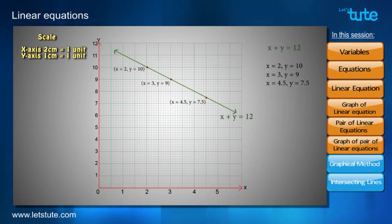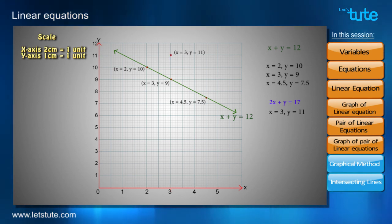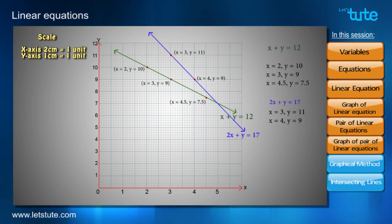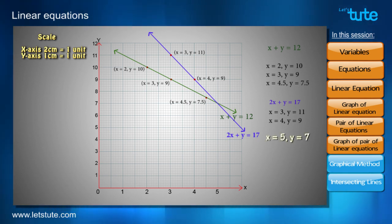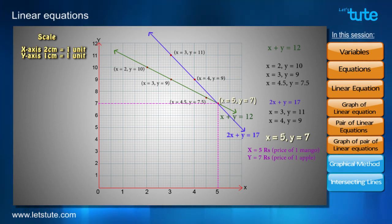On the graph, we can already see the line for x plus y equals 12. Now we plot the points for 2x plus y equals 17: x=3, y=11 and x=4, y=9. Joining them gives us the second straight line. These two lines intersect at the point (5, 7), and we take the point of intersection as the solution. Therefore, x equals 5 — the price of 1 mango is 5 rupees — and y equals 7 — the price of 1 apple is 7 rupees. This method is called the graphical method.